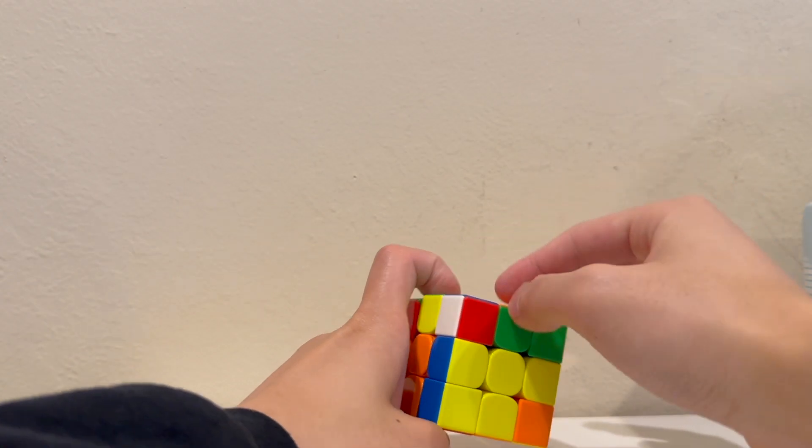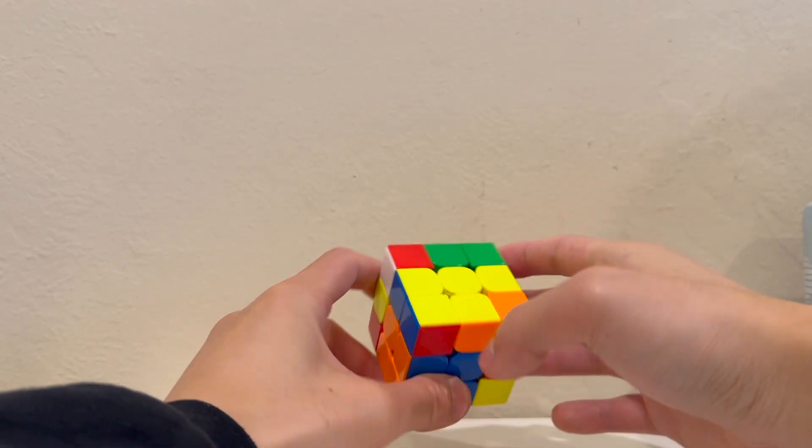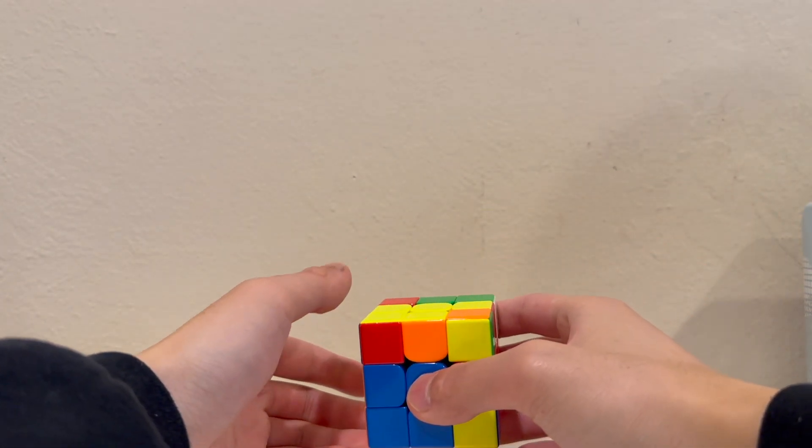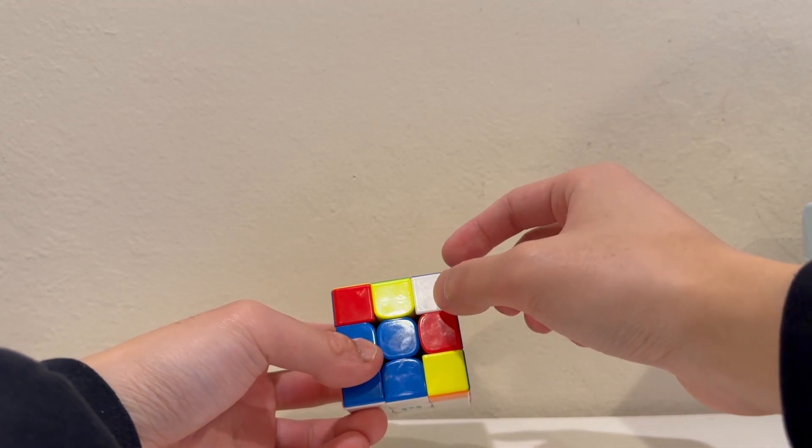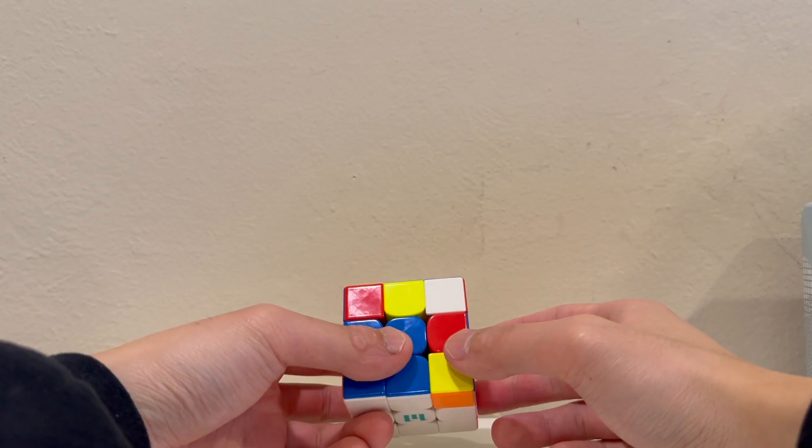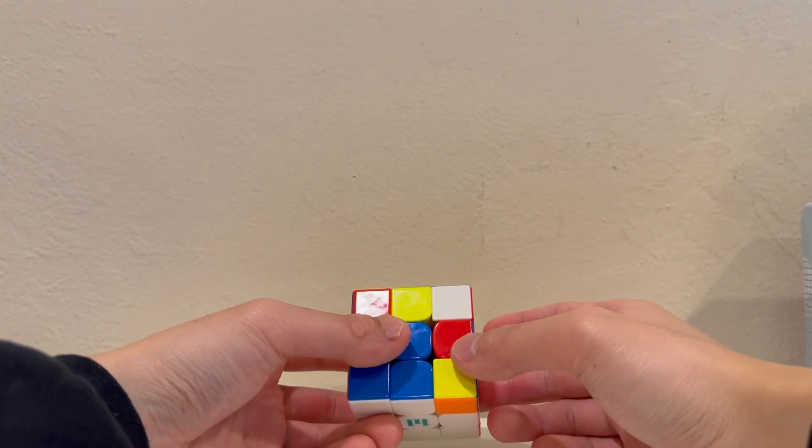With this he also had a pre-made orange green f2l pair which he inserted with l u prime l prime. His last f2l pair happened to be in the front right slot which is the best slot it could be in.